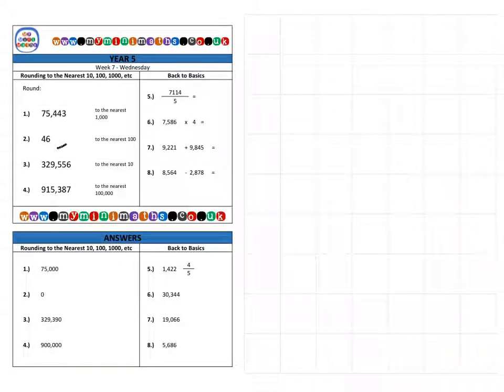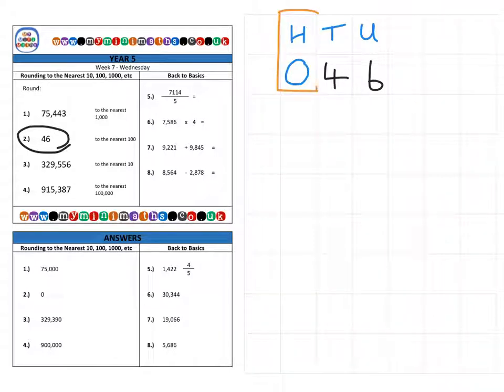Next, we're on to question 2, which is 46. I'm going to round this to the nearest 100. The first thing we need to do is label the columns: units, tens. And because we're going to be rounding to the nearest hundreds, we need to include the hundreds as well. As we have nothing in the hundreds, we need to place a 0 in here. We're going to be rounding this number to the nearest hundreds, which is this column here, and we're going to look next door.